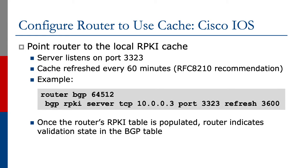This is what's recommended in RFC 8210, but you can make it more or less frequent if you prefer. An example on the screen shows the one-line configuration needed in Cisco IOS and IOS XE to configure the connection to the RPKI cache. Once the router's RPKI table is populated, the router indicates validation state in the BGP table. Cisco IOS does all this automatically for the operator.